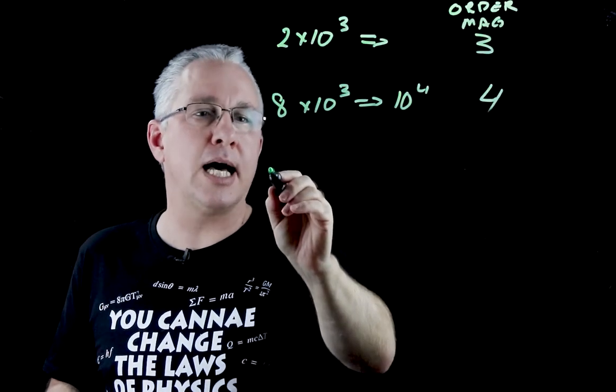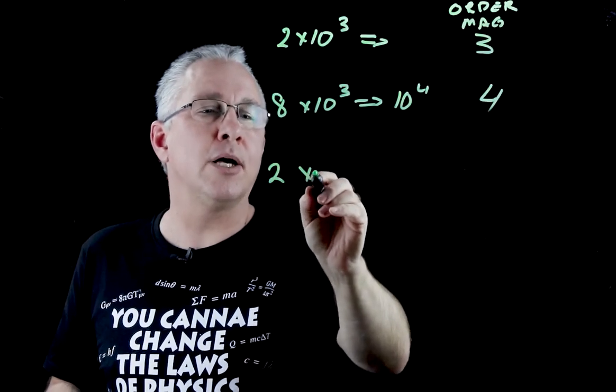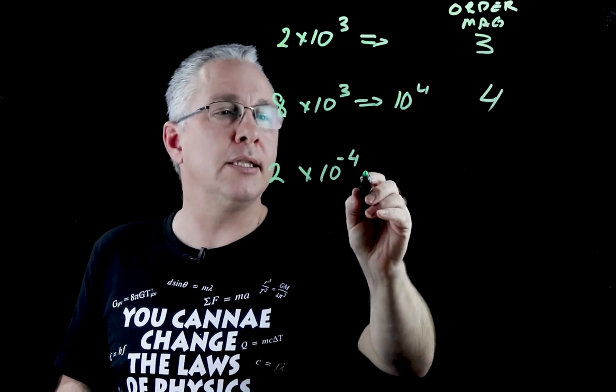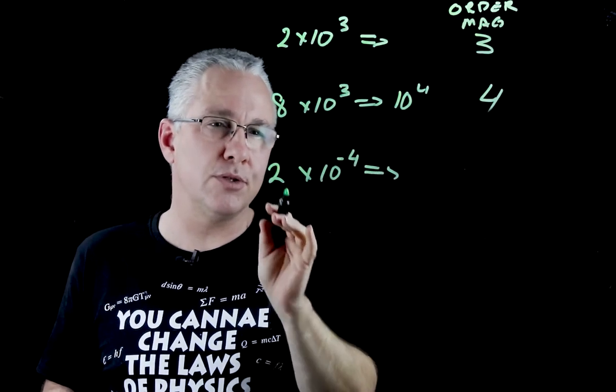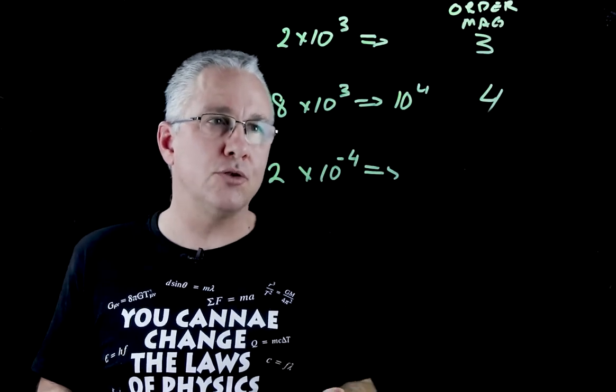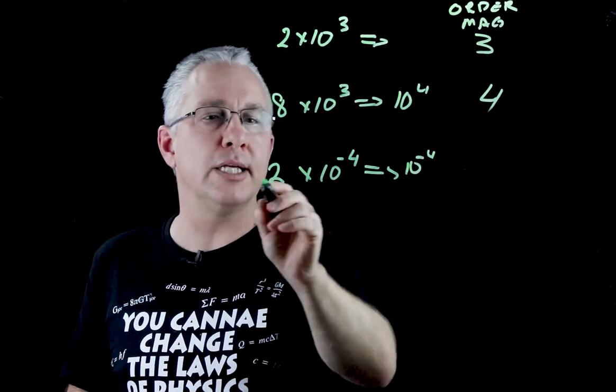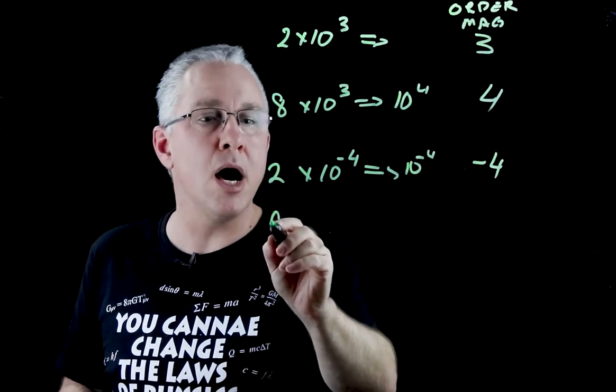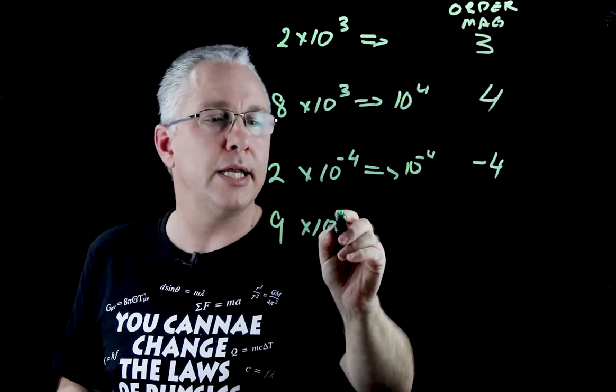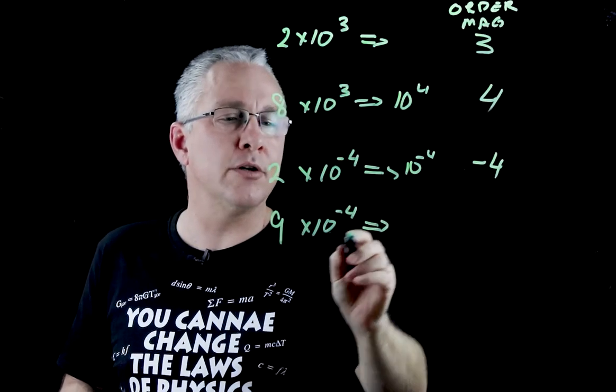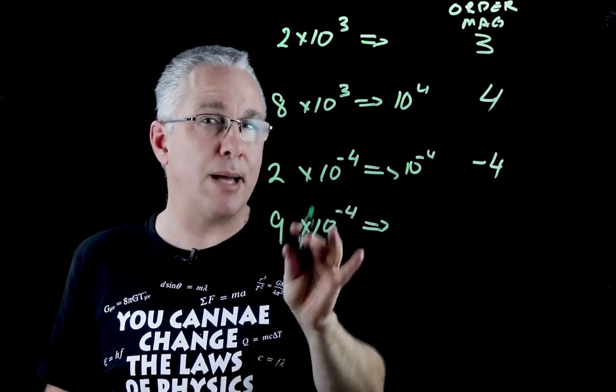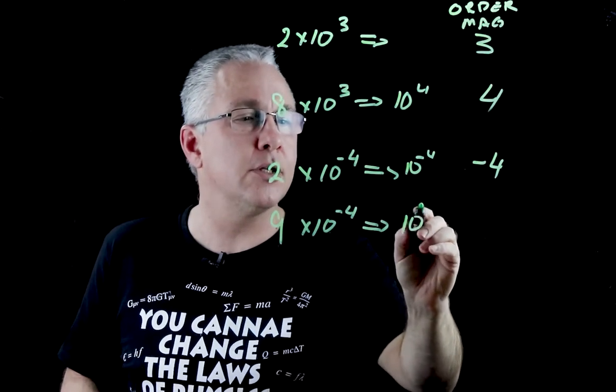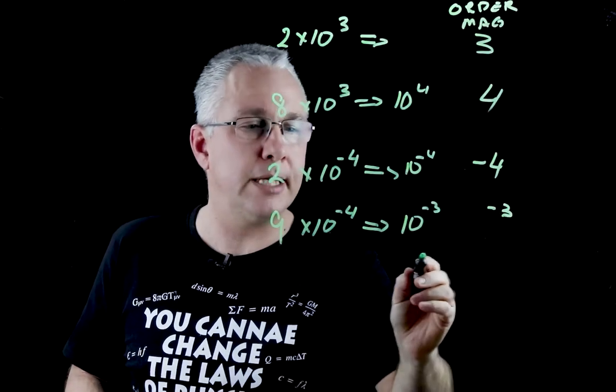Let's look at the reverse. Let's say I start with the 2 again but I multiply this by 10 to the power of negative 4. Again, this is 0.0002, so the order of magnitude is negative 4. What about 9 by 10 to the power of negative 4? Well in this case, my order of magnitude is getting close to the next power, so not 10 to the negative 4 but 10 to the negative 3, so the order of magnitude is negative 3.